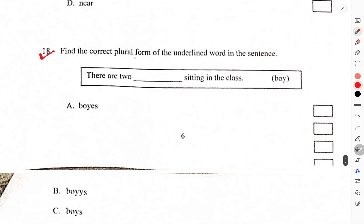Find the correct plural form of the underlined word in the sentence. There are two boys sitting in the class. B-O-Y-S. B is the correct.